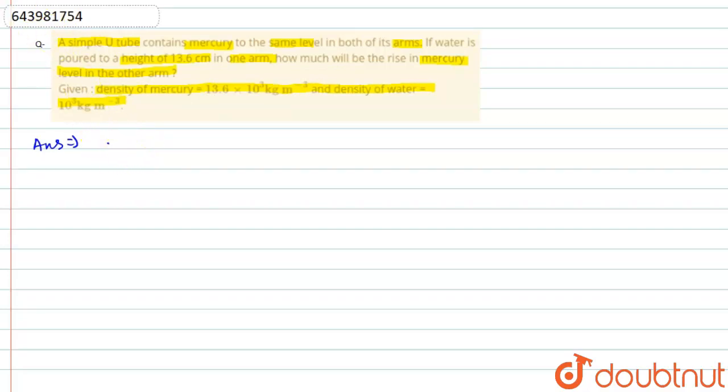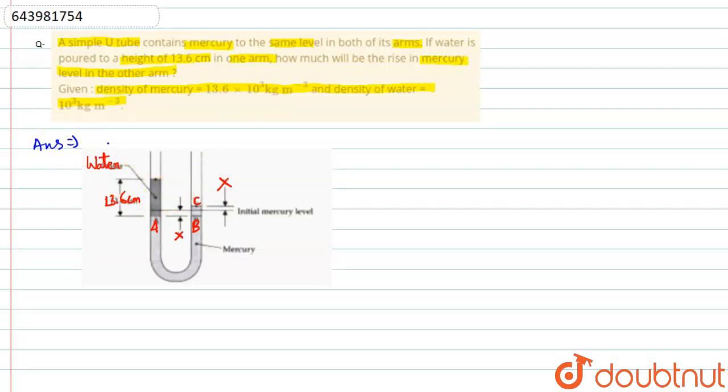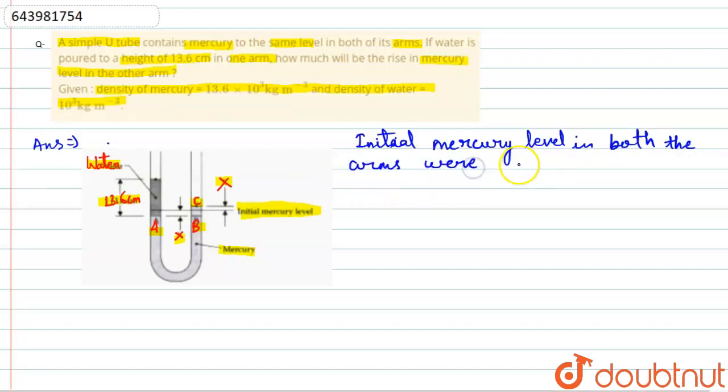I'll draw a diagram for this. The initial mercury level in both arms were the same, as you can see in the figure, and it's given in the question also.